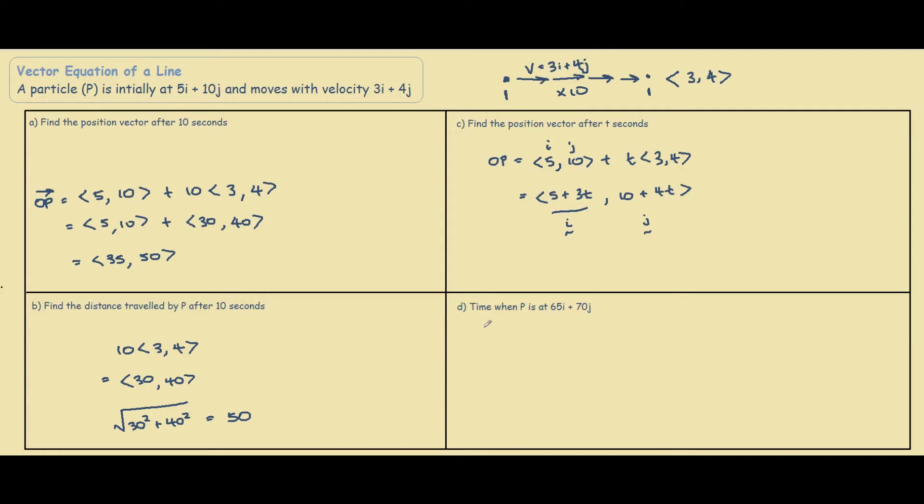Lastly, we want to find the time when the particle is at position 65i plus 70j. So what we do here is 5 plus 3t equals to 65. This is the general formula for the i movement. So we solve this, we have 3t equals to 60, so t equals to 20 seconds.